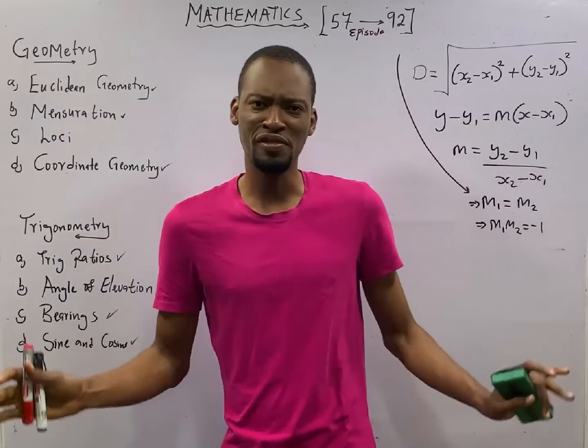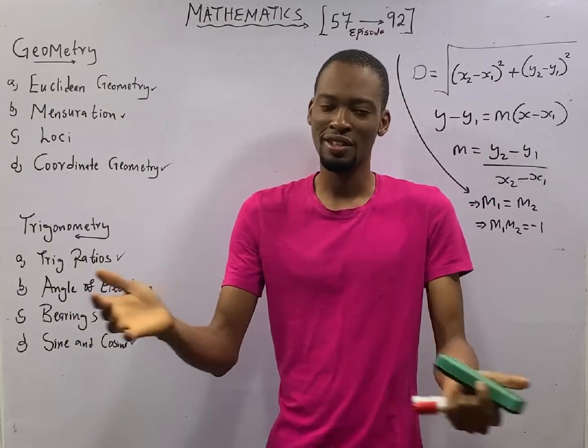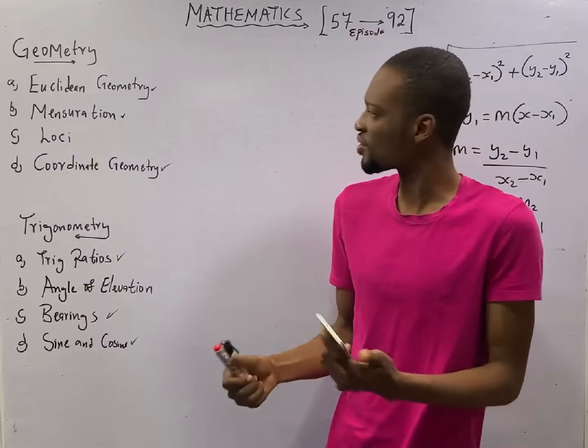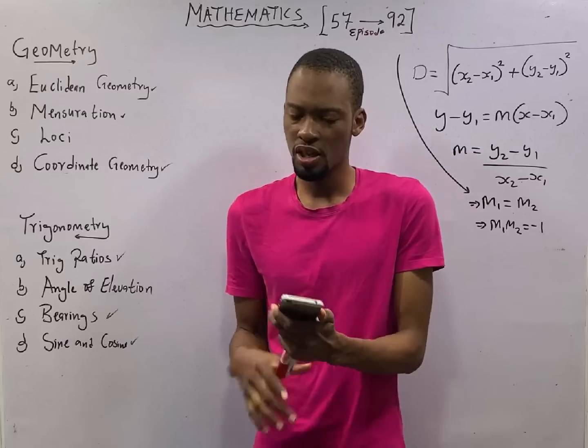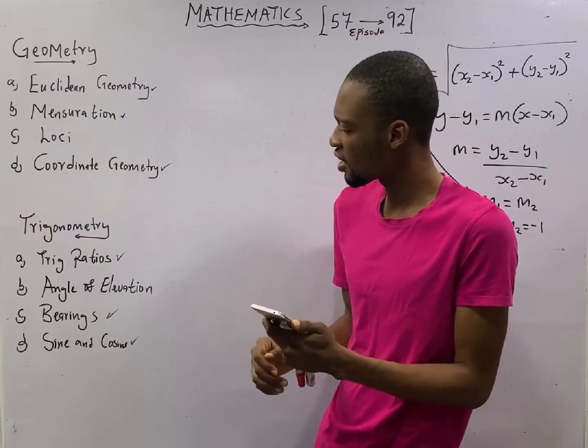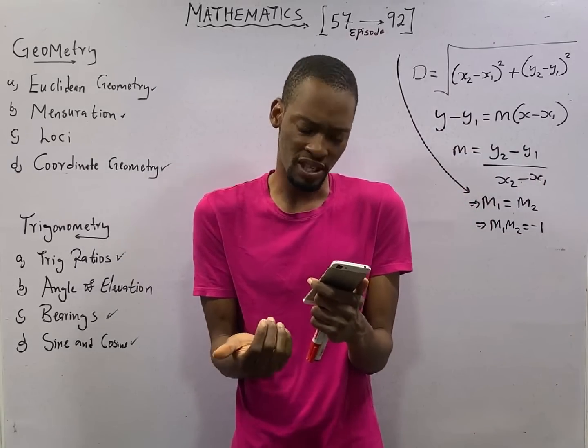This is episode 74 of the 120 Days to JAMB Mathematics with Flash Isaac. Remember, we are still answering questions under geometry and trigonometry using the FlashLearners JAMB application. So, the question we have before us here says: